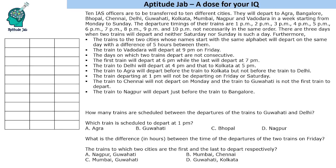It is given that there are three days when two trains will depart, and neither Saturday nor Sunday is such a day. The third statement says the days on which two trains depart are not consecutive. This makes it clear that these three days are Monday, Wednesday, and Friday. So: Monday – two trains, Tuesday – one train, Wednesday – two trains, Thursday – one train, Friday – two trains, Saturday – one train, Sunday – one train.